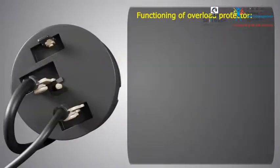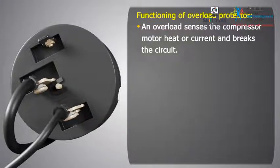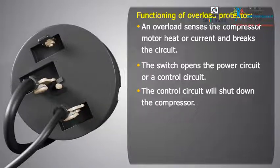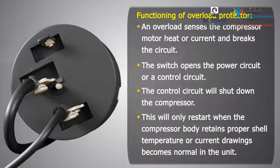Let me explain its functioning. An overload senses the compressor motor heat or current and breaks the circuit. The switch opens the power circuit or a control circuit. The control circuit will shut down the compressor. This will only restart when the compressor body retains proper shell temperature or current drawings become normal in the unit.